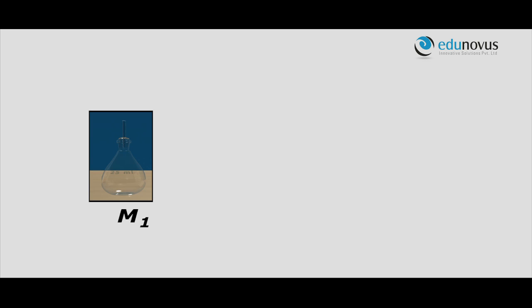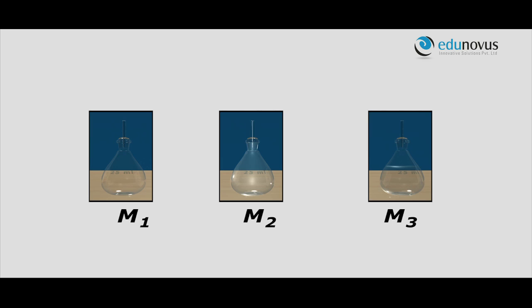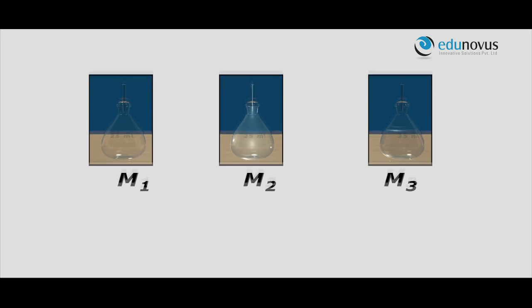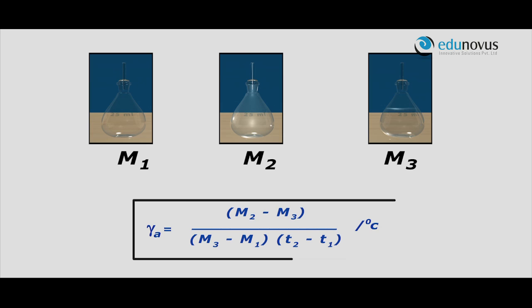If M1 is the mass of the empty container, M2 is the mass of the container with liquid filled, and M3 is the mass of the container with liquid after expansion, then gamma A = (M2 − M3) / ((M3 − M1) × (T2 − T1)) per degree centigrade.